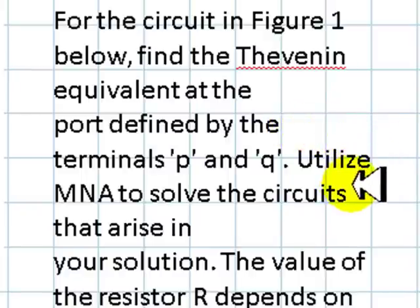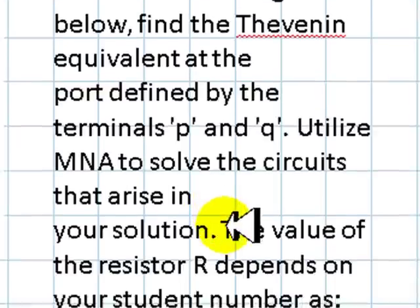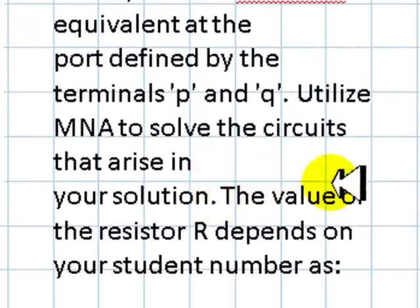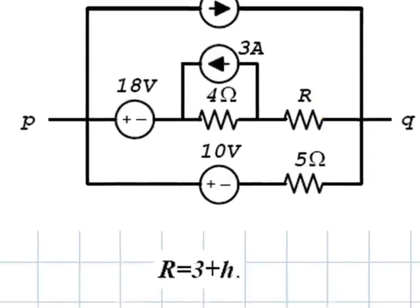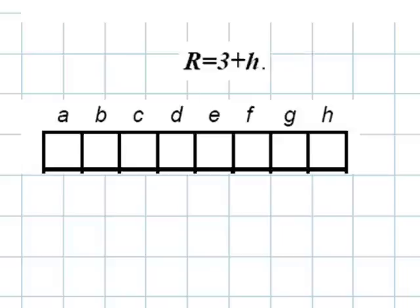Utilize MNA to solve the circuits that arise in your solution. The value of the resistor R depends on your student number according to this formula, where H is the last digit of your student number.